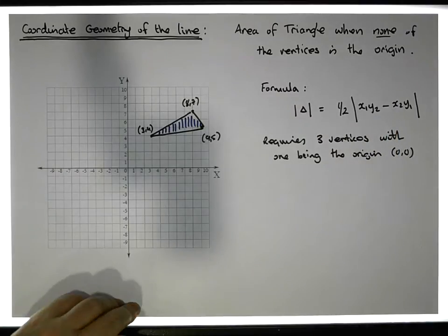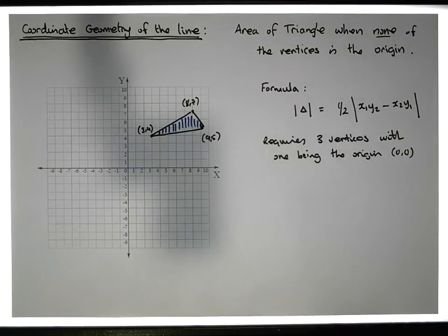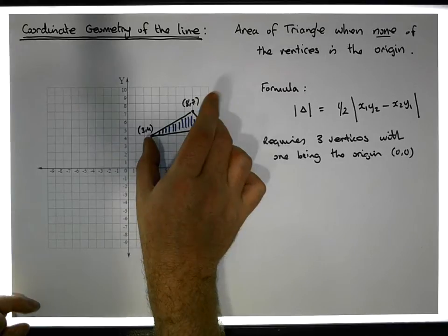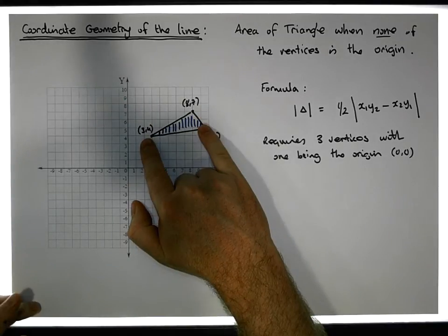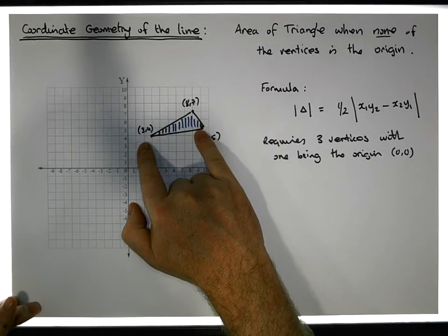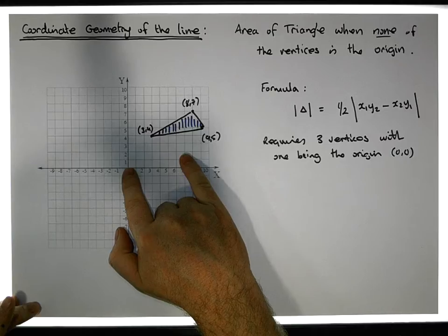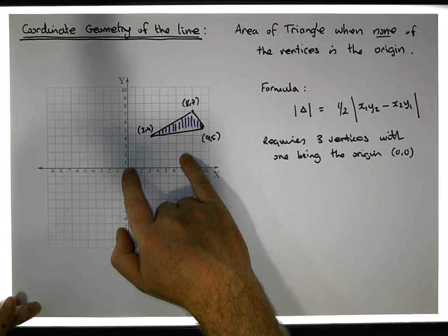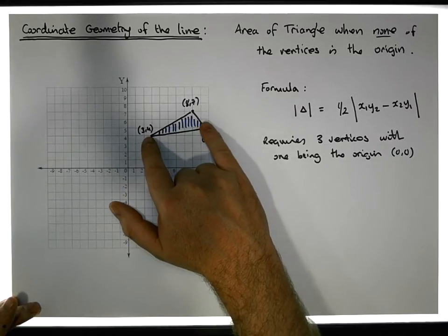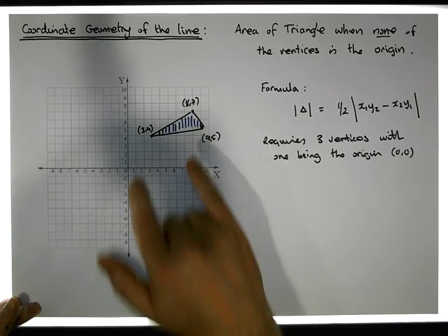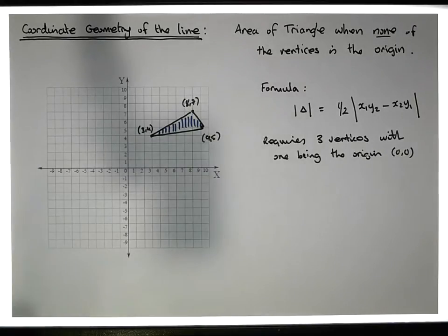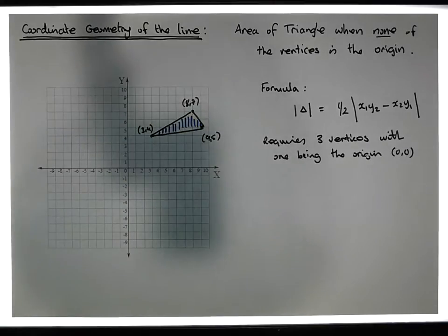But what we could actually do is shift this triangle from here down to here, where one of the vertices becomes the origin. We know how to do these shifts—they're called translations. In a previous video I showed you how to do a translation through a point, but in this case we're going to do a translation to a point.